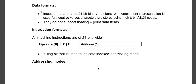Now we see the data format in SIC machine. Integers are stored in 24-bit binary numbers, meaning 3 bytes. For negative numbers, we store them in 2's complement form. And there is no floating point value in SIC machine.